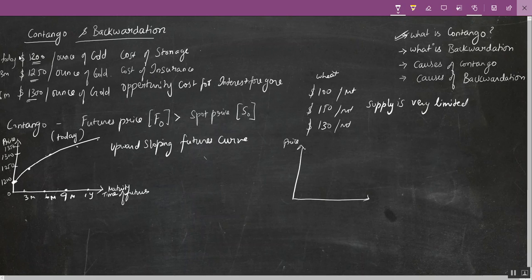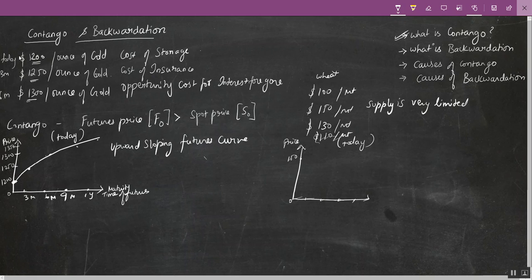Today, in this crisis situation, I am ready to pay $150 for wheat. But in the future — three months, six months, nine months, and one year down the line — I know the situation is going to improve. Say nine months down the line it's going to be peak season for wheat and I can get wheat at even $110 per metric ton. So plotting: $150, $140, $130, $120, $110. This is three months, six months, nine months, one year on the time axis.